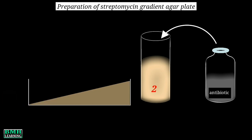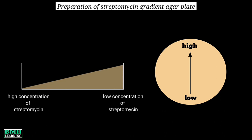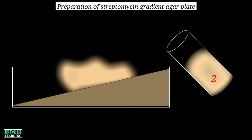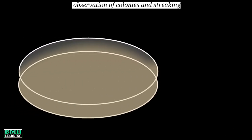The agar in the Petri plate is already solidified, so we remove the pencil and place the Petri dish horizontally. Before pouring the antibiotic agar, we mark both ends of the Petri plate: the end of the nutrient agar slope with high agar is marked as low streptomycin concentration, and the other end with low agar is marked as high streptomycin concentration. The molten agar medium containing streptomycin is then poured onto the plate so that it entirely covers the gradient agar layer, and the gel is kept to solidify.